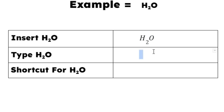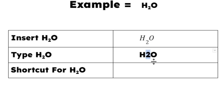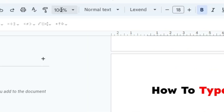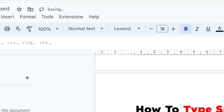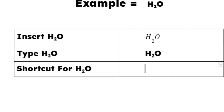The second method: first type H2O, then select the 2 (or whichever character you want to subscript). Now go to Format, then Text, and here you will find 'Subscript'. Click on Subscript and now it is in subscript.